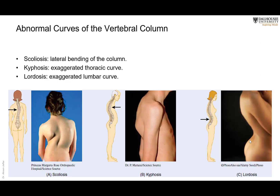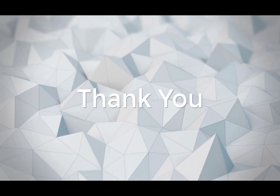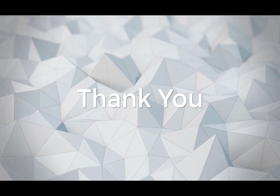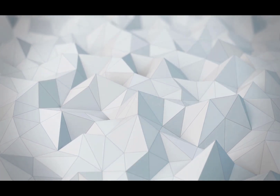Abnormal curvatures include scoliosis, which is a lateral curvature of the vertebral column; kyphosis, which is an accentuation of the thoracic curvature; and lordosis, which is an accentuated curvature of the lumbar region.